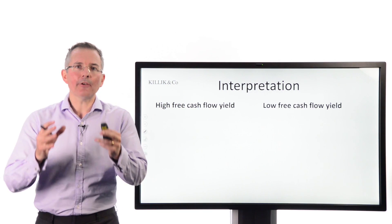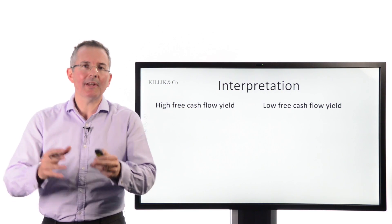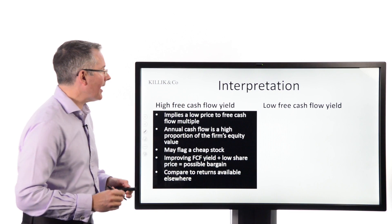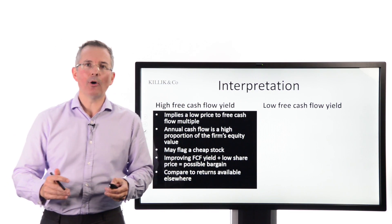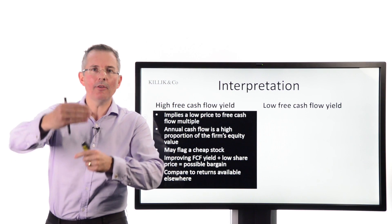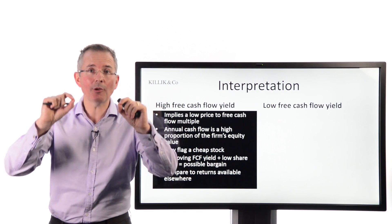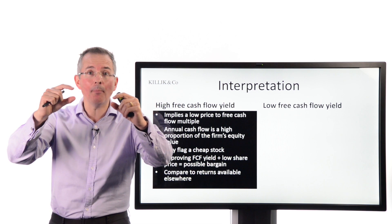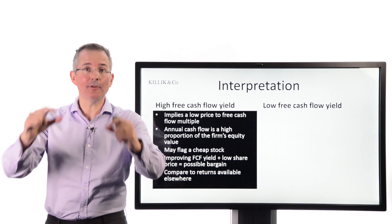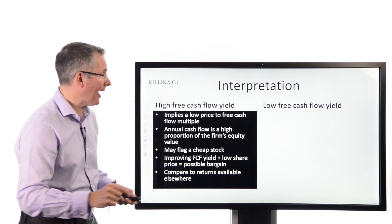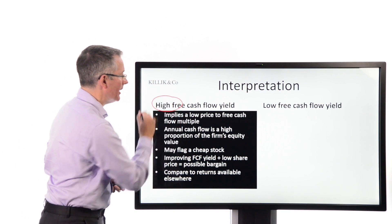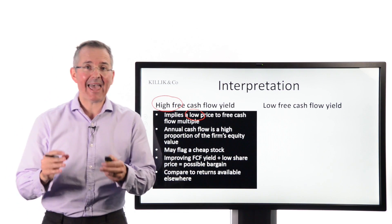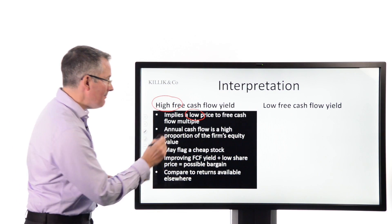In terms of interpretation — once we've done the numbers and come out with our percentage — a high free cash flow yield implies a low price-to-free-cash-flow multiple. Just be aware there are people who like to express this as a multiple rather than a yield, turning the ratio on its head so it becomes the current price per share as a multiple of free cash flow per share. Mechanically, a high free cash flow yield means annual cash flow is a high proportion of the firm's equity value. That's good news, and may flag a cheap stock.